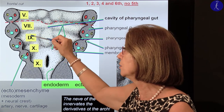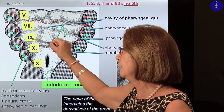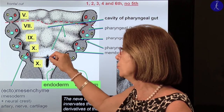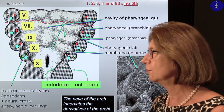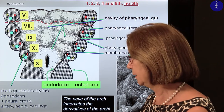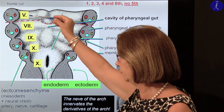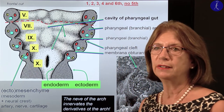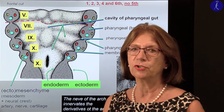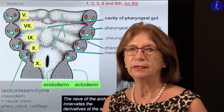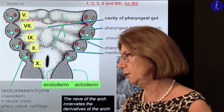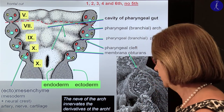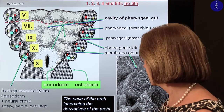The second arch nerve is the facial nerve (VII), the third is the glossopharyngeal (IX), and for the fourth and sixth arch two branches of the vagus nerve give the innervation. These are the pharyngeal arch nerves — it's worth remembering them because you will see in neural anatomy that they have a lot of similarities in structure and central nervous system organization.